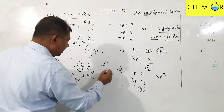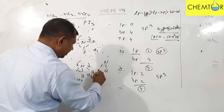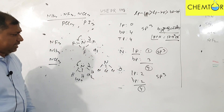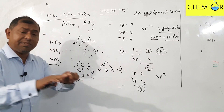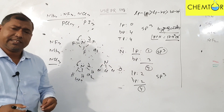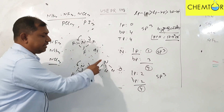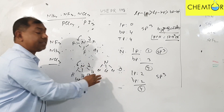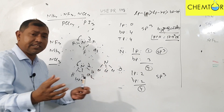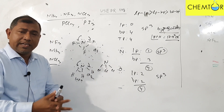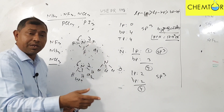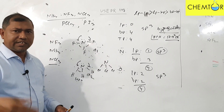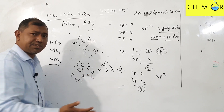NCl3 means nitrogen is connected with chlorine. Nitrogen and chlorine — why is nitrogen more electronegative than chlorine? In this case, no matter the size, the nitrogen is more electronegative. So chlorine is less electronegative than nitrogen, and the lone pair is farther from the nucleus.